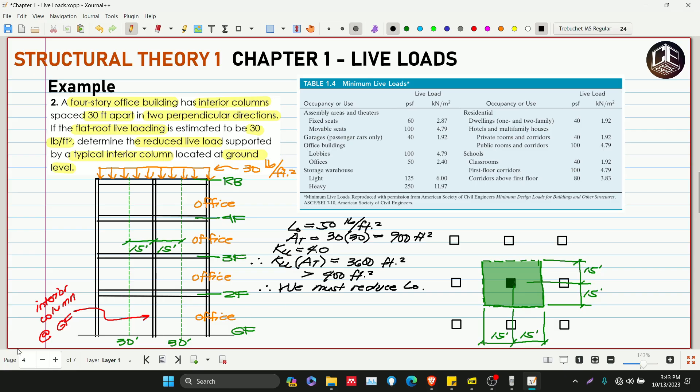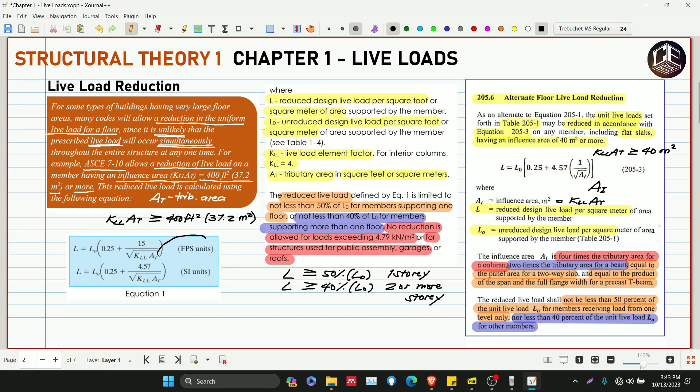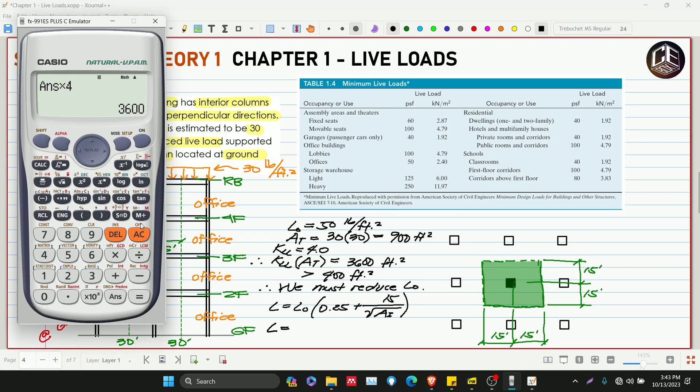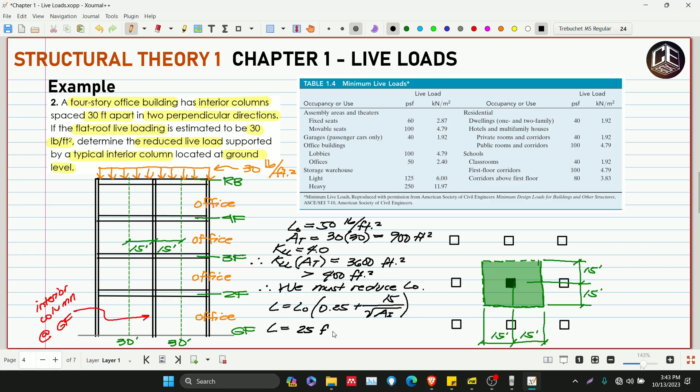The reduced live load under FPS unit or English unit is: L equals L0 multiplied by 0.25 plus 15 over the square root of AI. So our reduced live load is L0 of 50 multiplied by 0.25 plus 15 over the square root of AI, which is 3,600, giving us 25 pounds per square foot. This is our design or reduced live load.